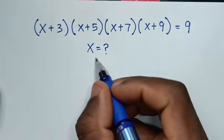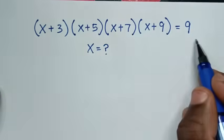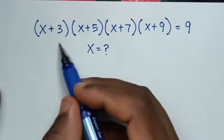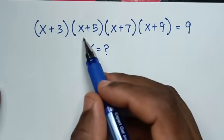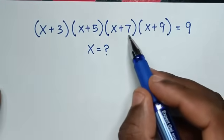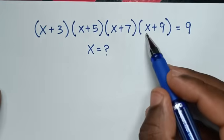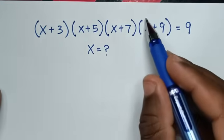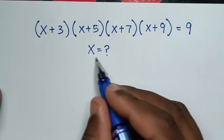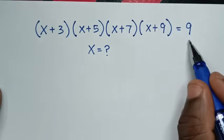Hello, you are welcome to solve this math problem, which is (x+3)(x+5)(x+7)(x+9) = 9. We need to find the values of x from this equation.